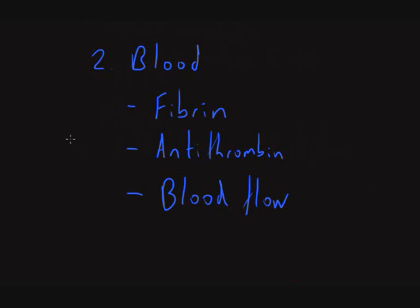Moving on to the blood anticoagulant factors, starting with fibrin itself. During the creation of fibrin, about 85–90% of thrombin is removed from the coagulation cascade by adsorption to the fibrin filaments, making it almost a self-limiting step. Similarly, blood flow removes activated clotting factors from the peripheries of the clot. If there is insufficient vessel wall injury at the edges, blood flow removes these factors and prevents propagation of the clot.